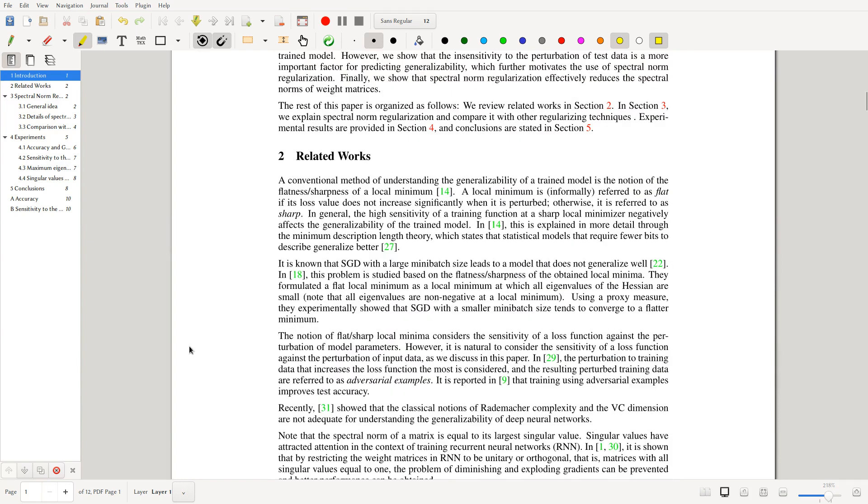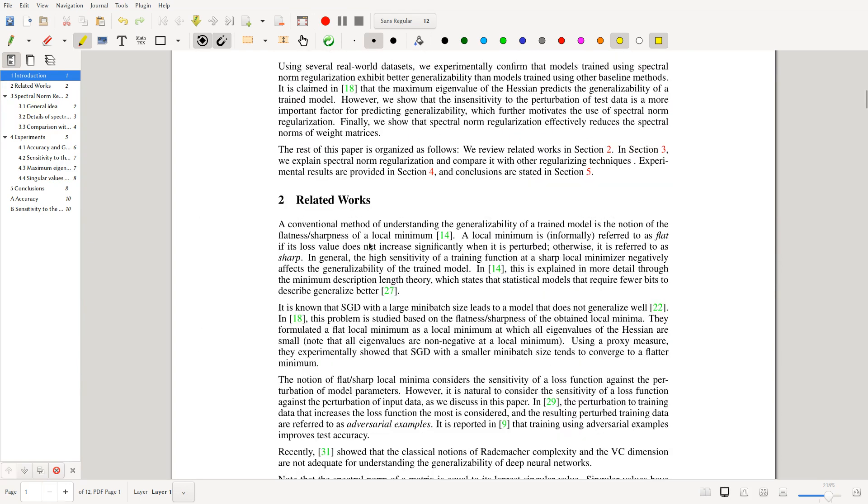Let's look at the related works section. A conventional method of understanding generalizability of a trained model is looking at the flatness and sharpness of the local minima. We have a flat minima if its loss value is quite stable when it is perturbed, otherwise it's a sharp one. So the idea is that the high sensitivity of training function, a sharp local minimizer negatively affects the generalizability.